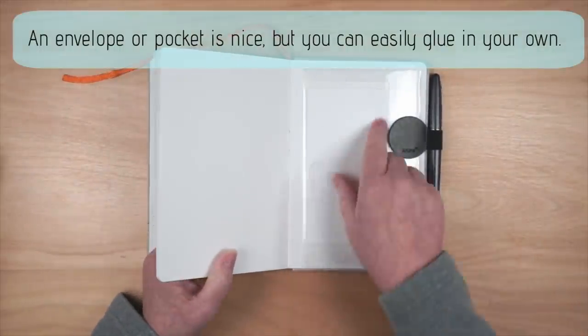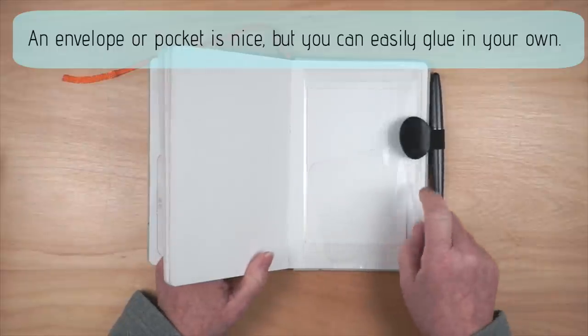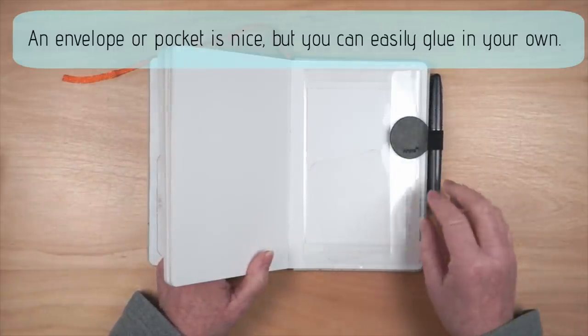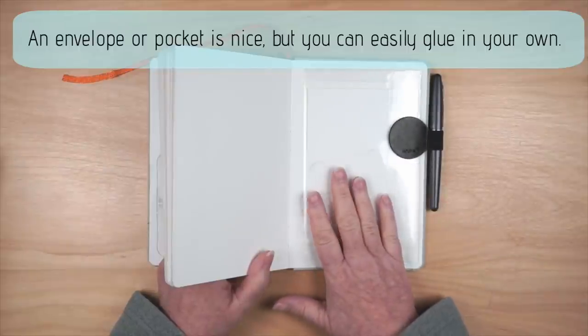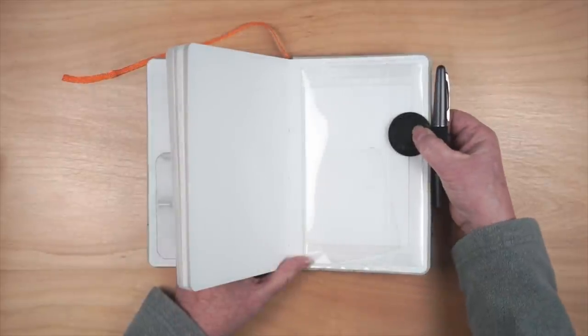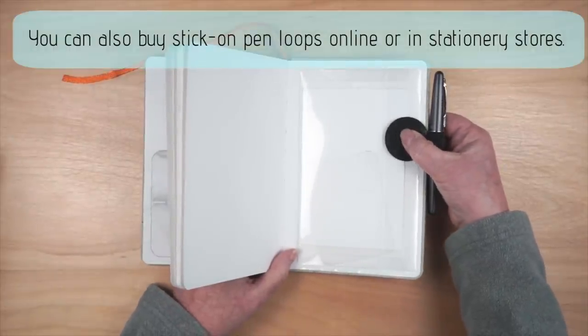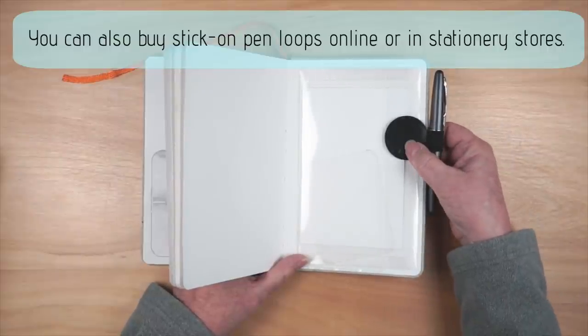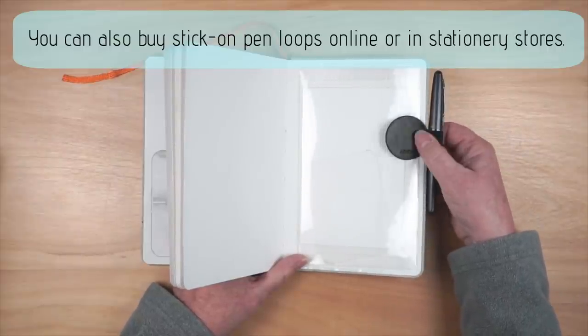Another nice feature of this sketchbook is the little envelope or pocket that's glued in the back. I like this feature, but I don't rule out a sketchbook that doesn't have it because I can easily glue in my own envelope. Another nice feature is a pen loop, but I simply buy stick-on pen loops online or in stationery stores and add them to my journals as needed.